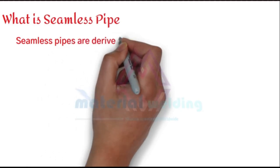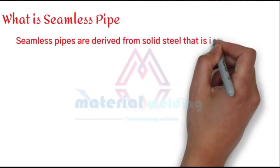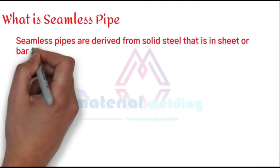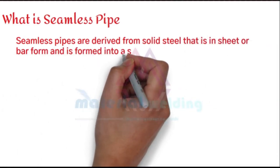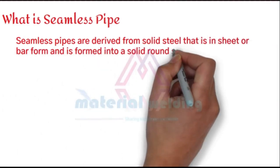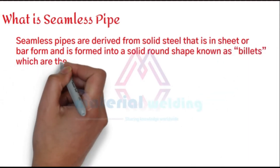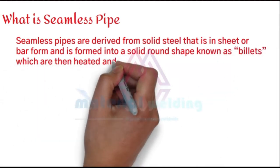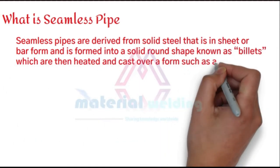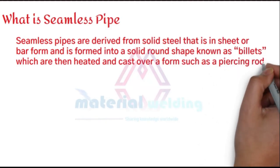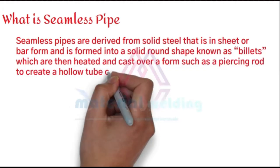Next is the seamless pipe. Seamless pipes are derived from solid steel that is in sheet or bar form and is formed into a solid round shape known as billets, which are then heated and cast over a form such as a piercing rod to create a hollow tube or shell.